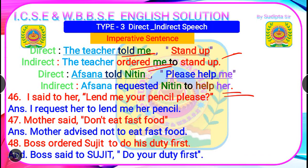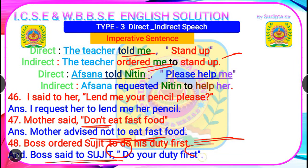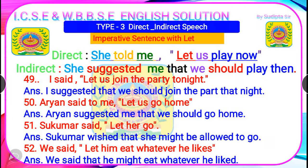Next: 'I said to her, lend me your pencil, please.' Answer: 'I requested her to lend me her pencil.' Question 47: 'Mother said, don't eat fast food.' Answer: 'Mother advised not to eat fast food.' 'Don't' → 'not to' for negative imperative. Next: 'Boss ordered Sujit to do his duty first.' — this is in indirect speech; you have to transfer it to direct speech: 'Boss said to Sujit, do your duty first.' — use comma and inverted commas for the reported speech.